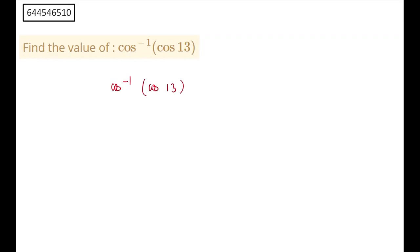And here I can't just simply cancel my cosines because the range of cos inverse x is from 0 to π, right? And my 13 does not lie between 0 to π. So here I need to convert it in a term that will lie between 0 to π. So let's think what can we do?